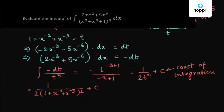Now if we take x to the power minus 5 common from this bracket, we can further simplify the expression.